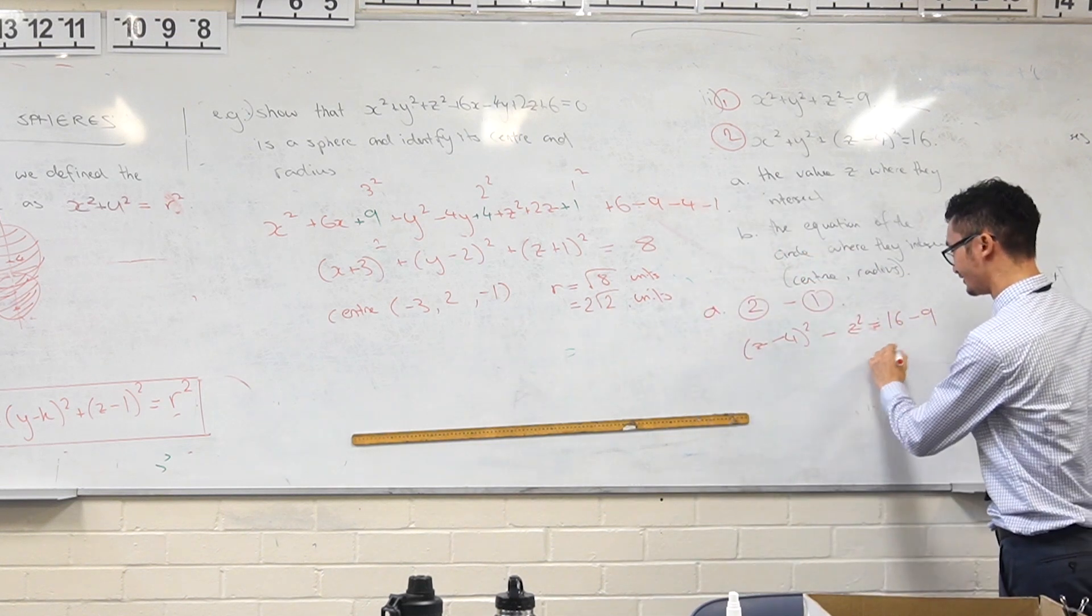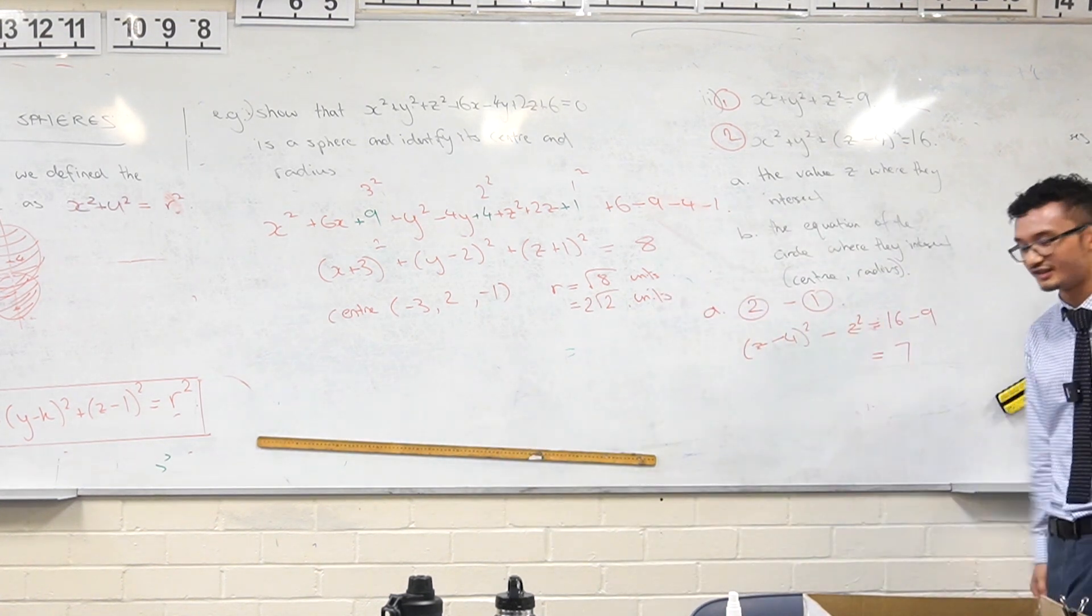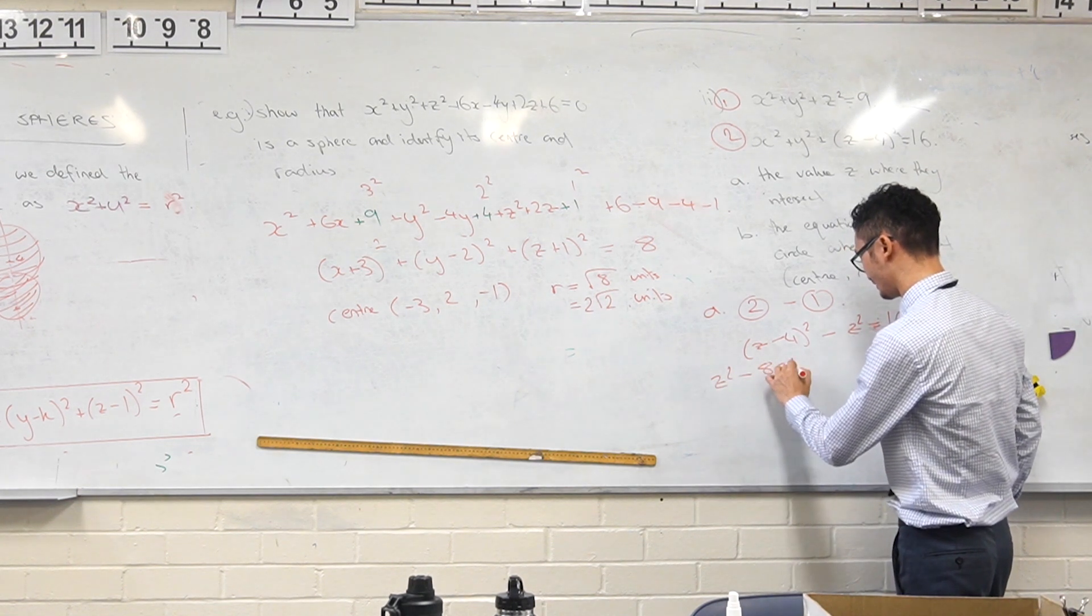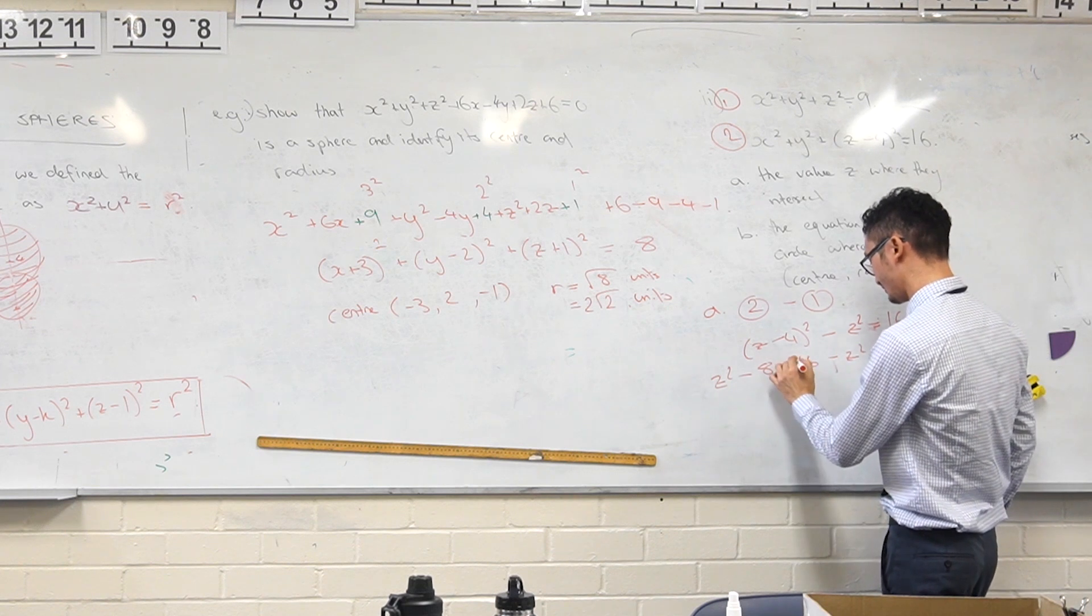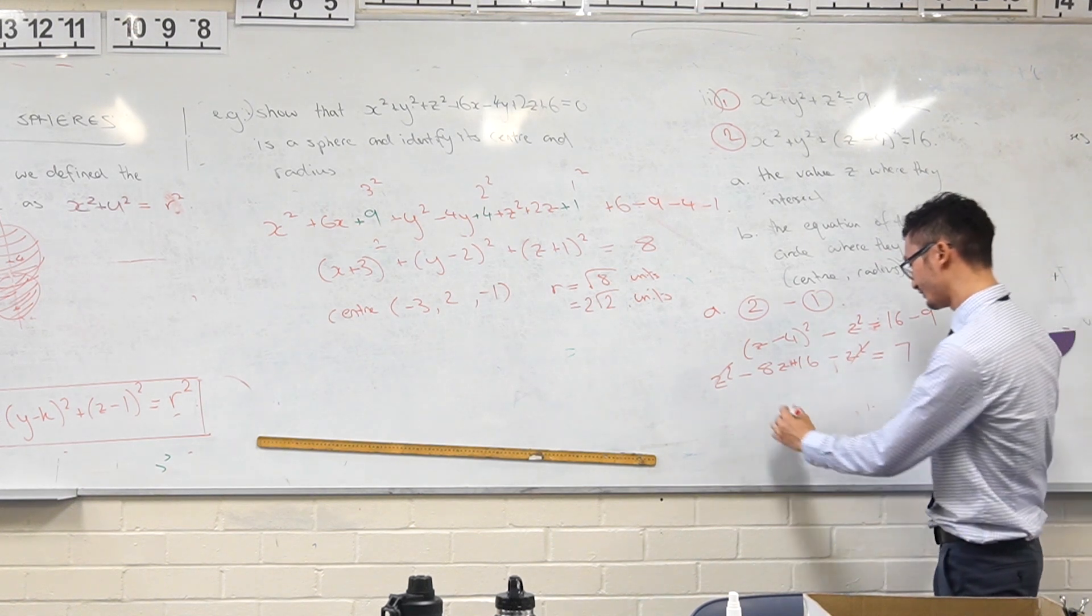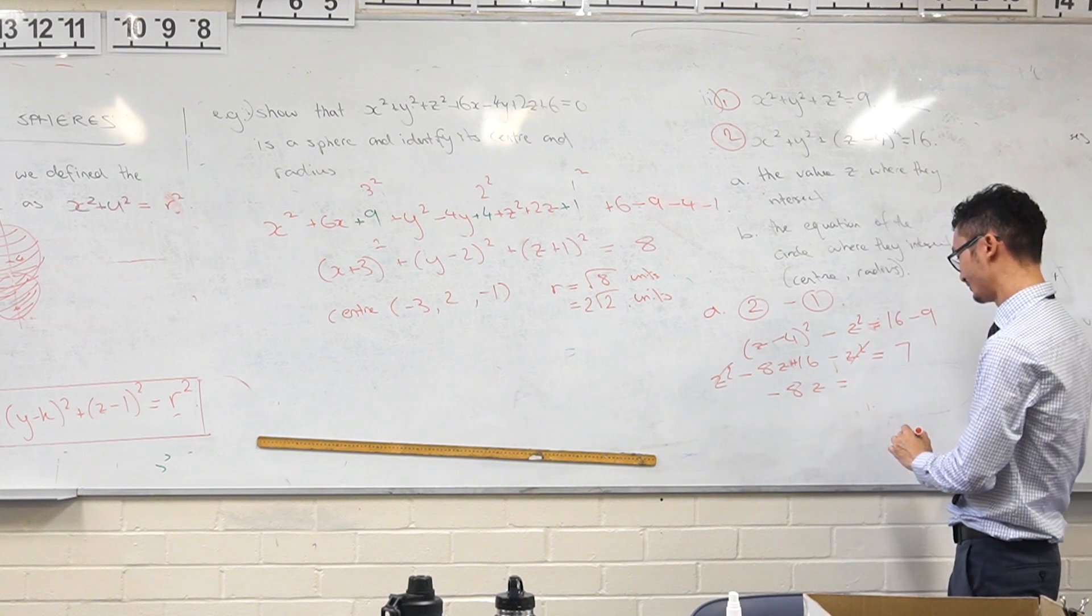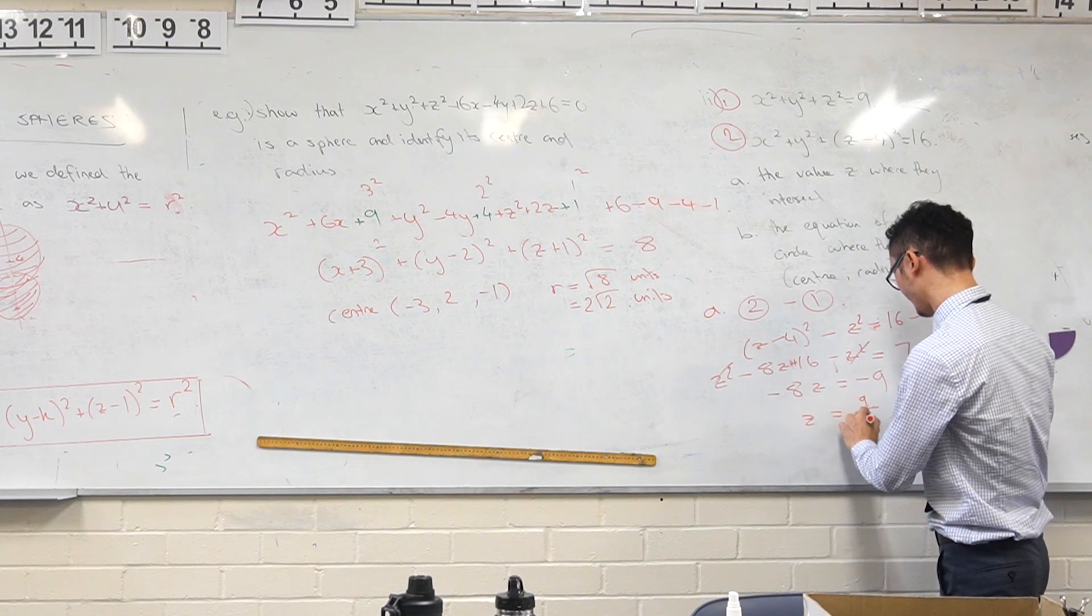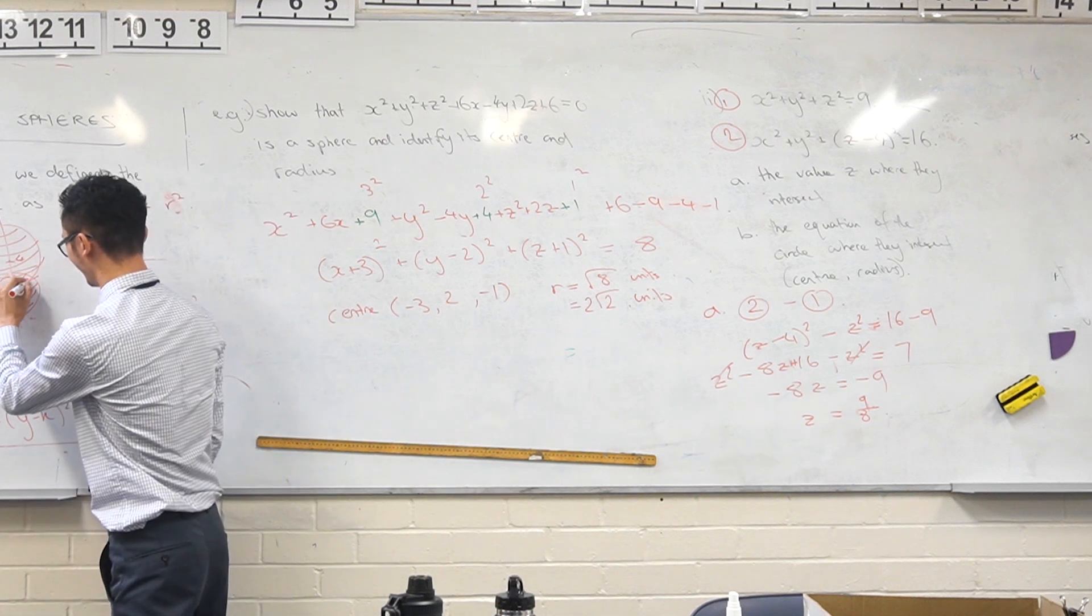So I've got 7 on this side. Expand it out: z² - 8z + 16 - z² and lo and behold, these are canceling out. We're getting left with -8z = -9, and so z = 9/8.